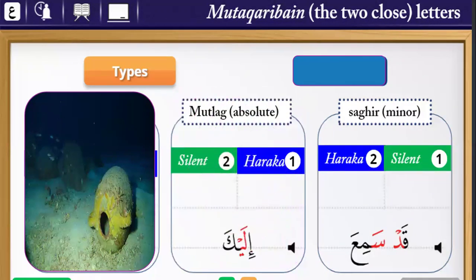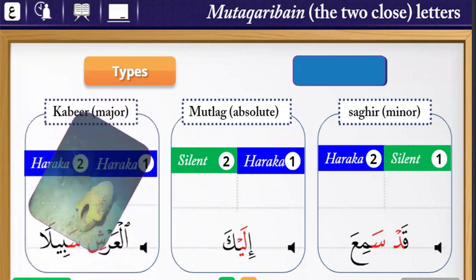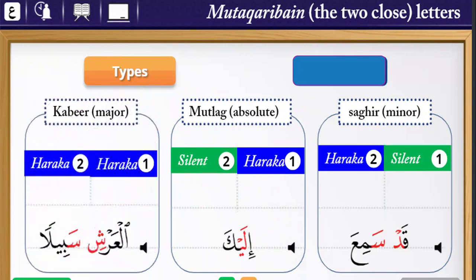Number two: مُطلق — absolute. Absolute means the first letter has حركة and the second letter is silent. For example: إِلَيْكَ. Number three: كبير — major. Major means the first letter has حركة and the second letter also has حركة. For example: الأَرْضِ سَبِيلاً.